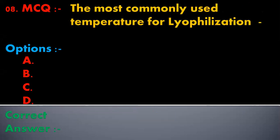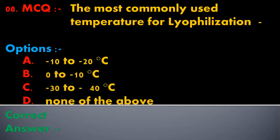The eighth multiple choice question is: the most commonly used temperature for lyophilization is — options are minus 10 to minus 20 degrees Celsius, 0 to minus 10 degrees Celsius, minus 30 to minus 40 degrees Celsius, or none of the above. The correct answer is minus 30 to minus 40 degrees Celsius.